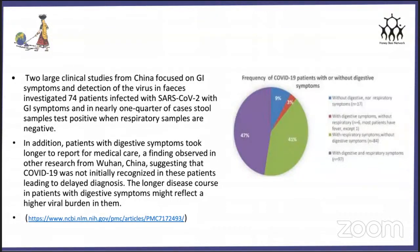As per clinical studies done in China, this pie chart shows that 47% of patients were observed with both digestive and respiratory symptoms, and 41% had respiratory symptoms without digestive symptoms. This study was done in 74 patients, among whom approximately 28% were observed with positive stool tests while their respiratory samples tested negative. In addition, patients with digestive symptoms took longer to report for medical care, hence took longer for recovery, and therefore generally became critical.